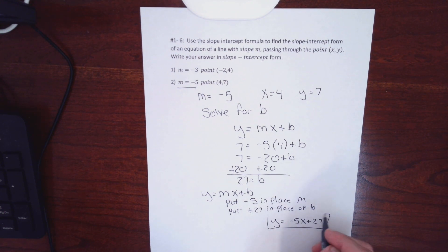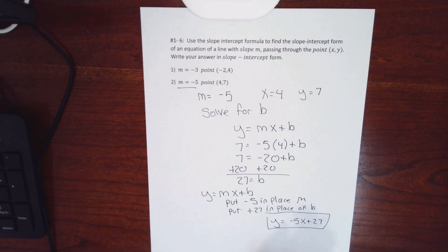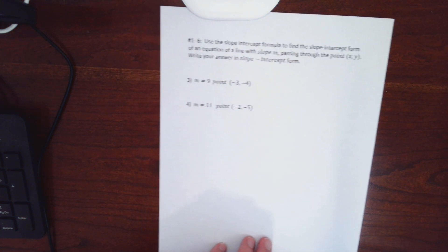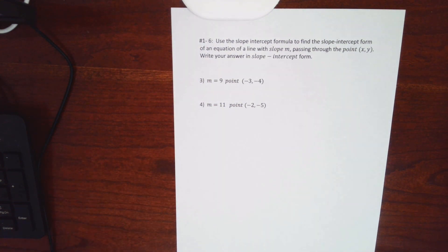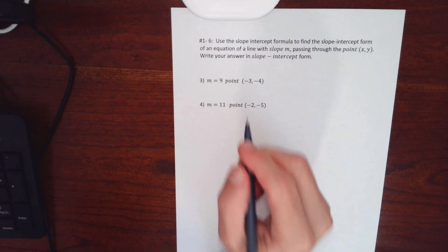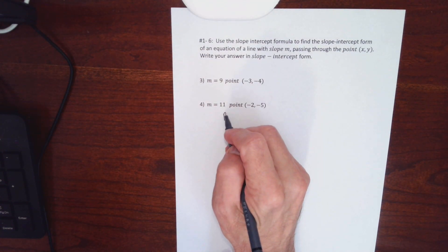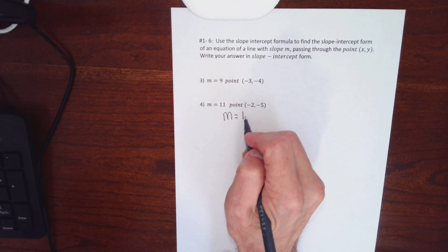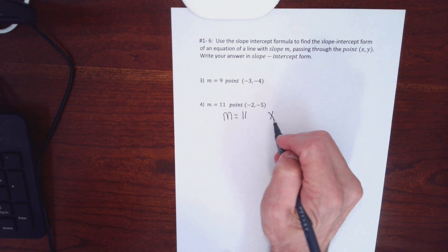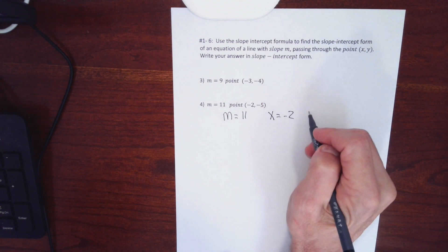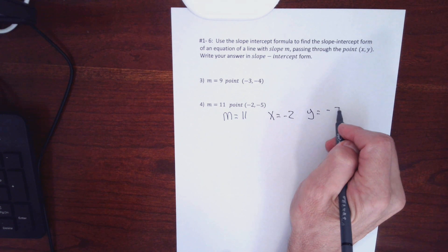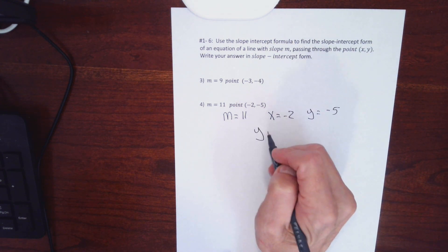That's the equation of the line with slope negative 5 that, if graphed, would pass through the point 4, 7. A few more of these and then we'll move on to the other way. Same strategy here: I'm going to plug m equals 11, x equals negative 2, y equals negative 5 into the formula y equals mx plus b.